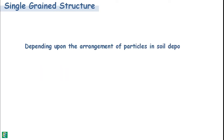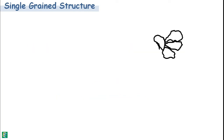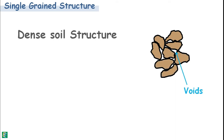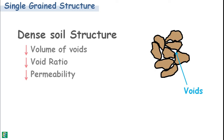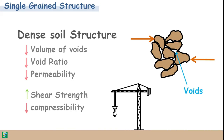The arrangement of these soil particles in their deposition gives the soil a loose or dense structure. When particles are closely packed together, leaving very little void space between them, the structure is denser. As the volume of voids is less, the void ratio is lower and so is the permeability. Dense soils have high shear strength and low compressibility, which makes them more preferable for engineering purposes.